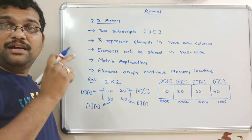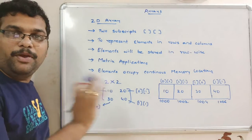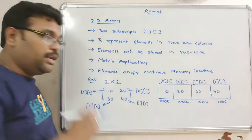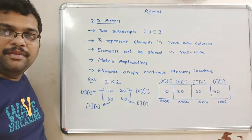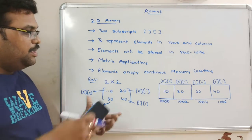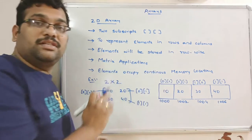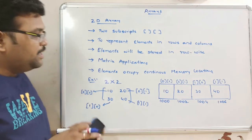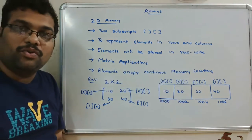If you read the elements, the data will be stored in such a way that all elements occupy continuous memory locations. It follows row-wise order.